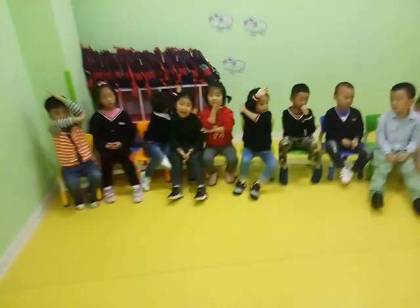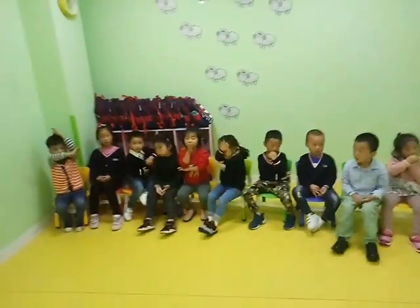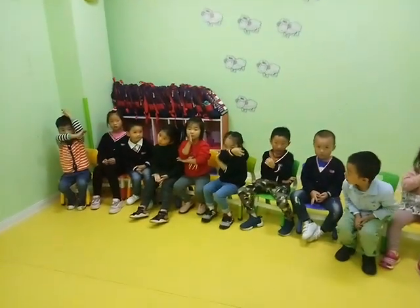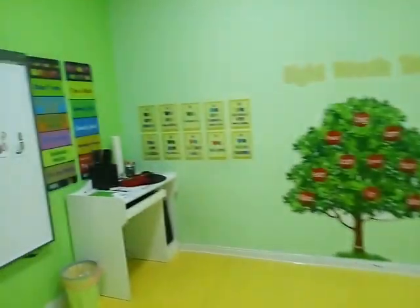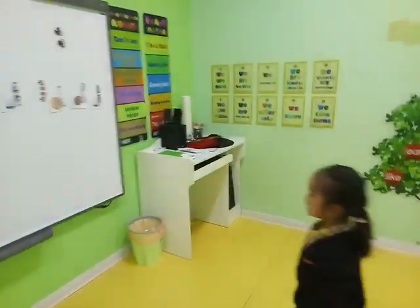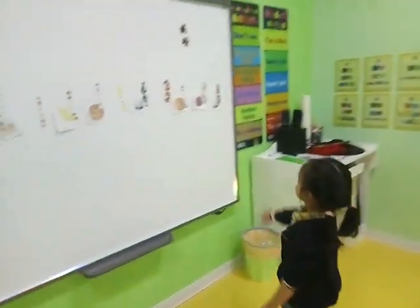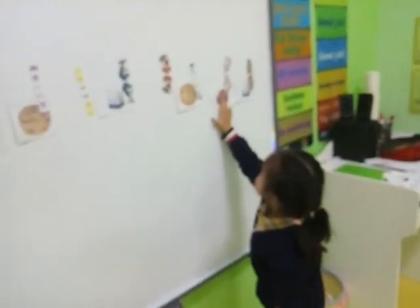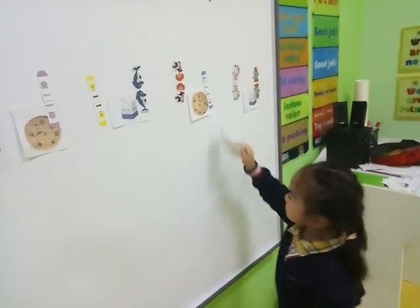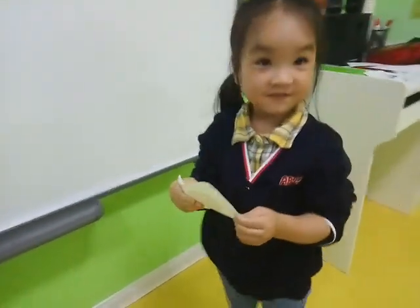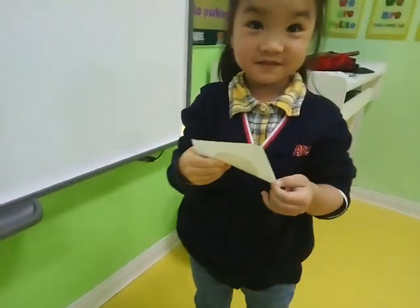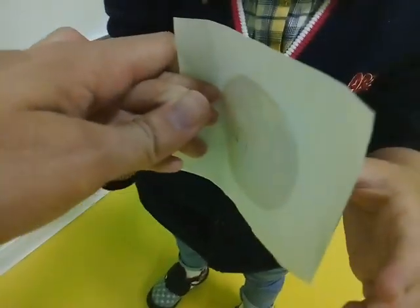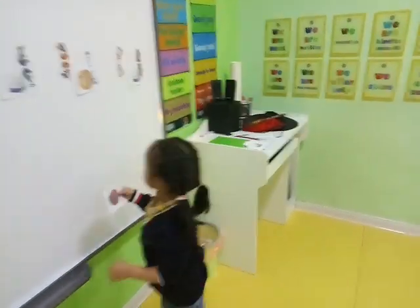Here we go, we have Anna. Come on, Anna. Hurry up. What food do you like? I like apple. And Anna got 5 points. Very good, Anna, sit down.